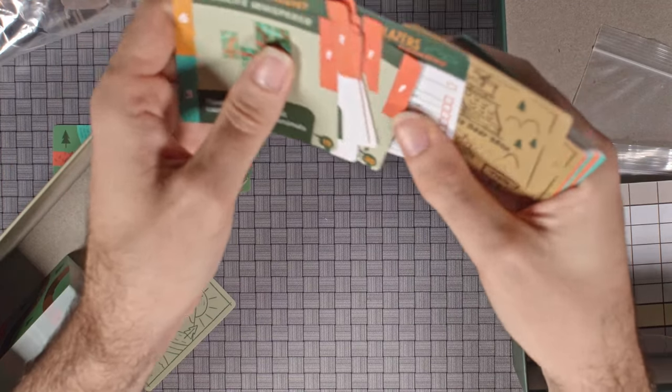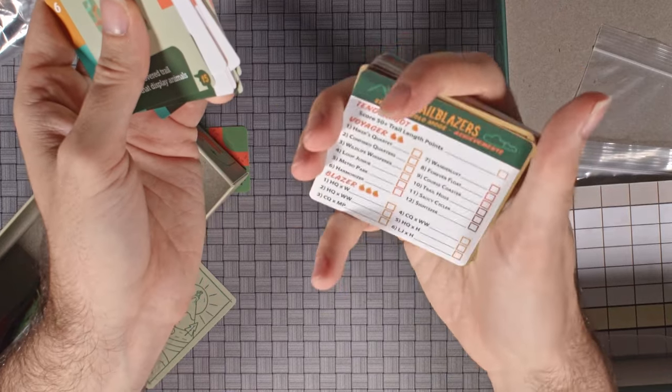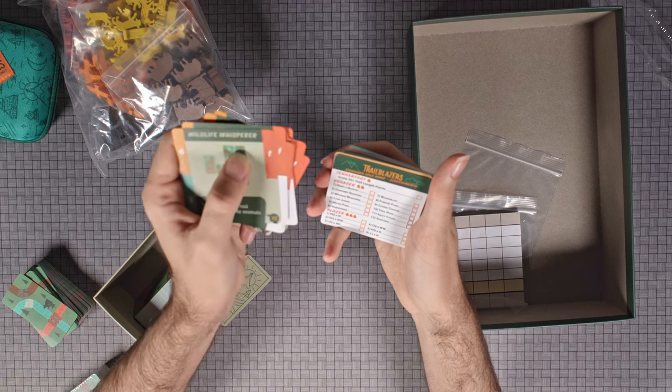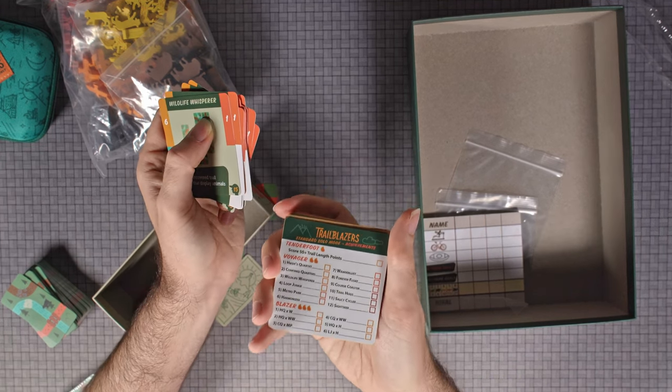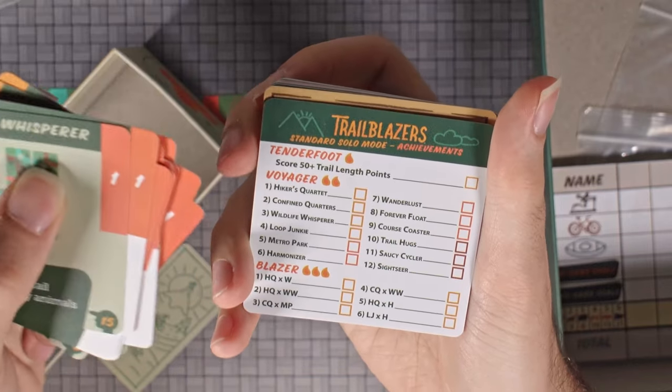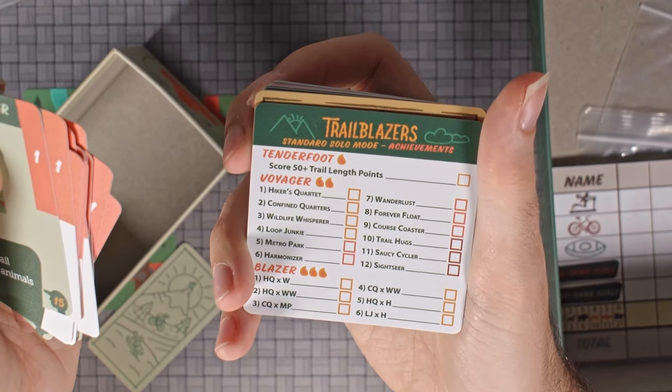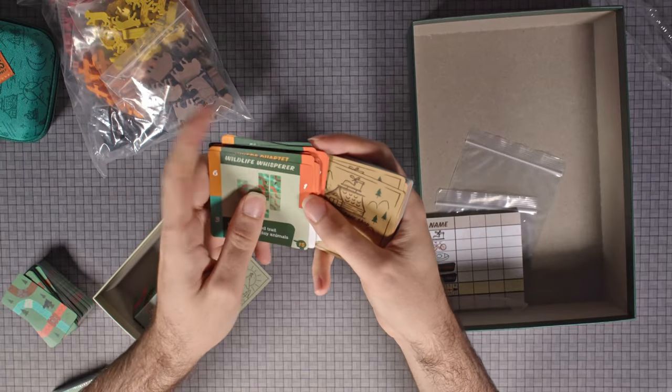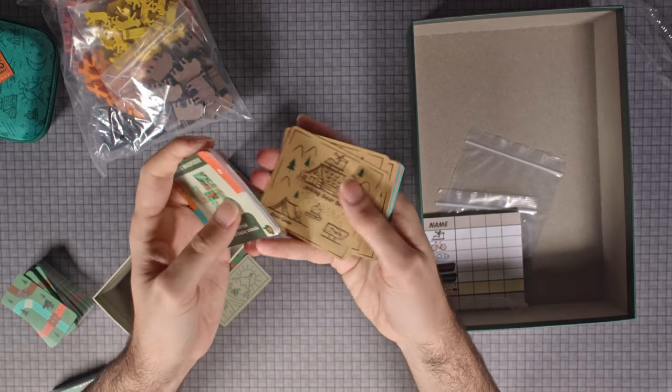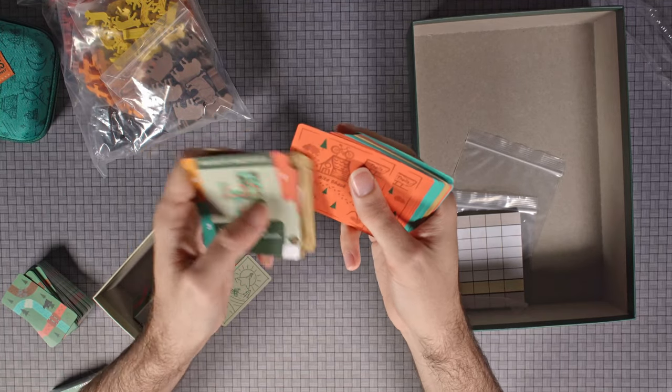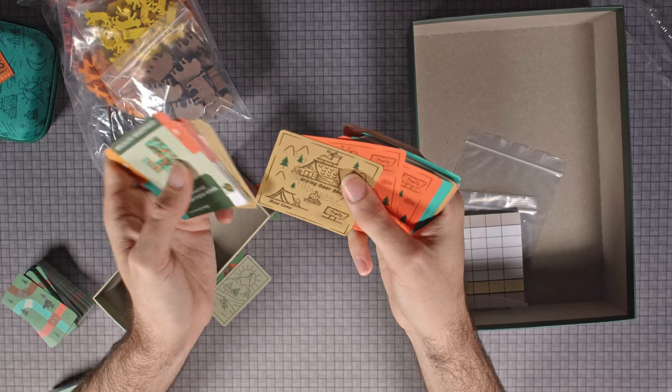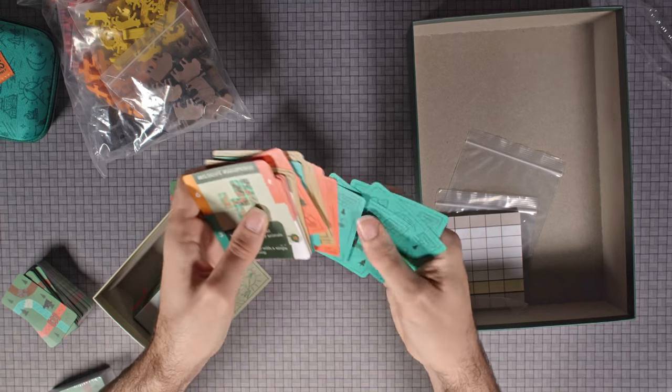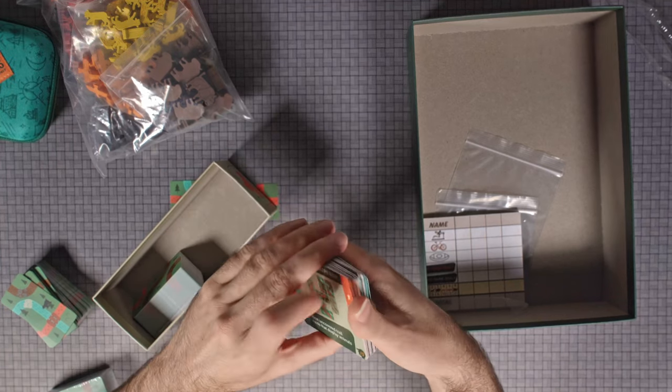Standards—oh, solo mode stuff. Oh my gosh, different achievements. It looks like Tenderfoot if you get 50 plus trail length points. Let me actually hold that so you can actually see it. A Voyager, like Hikers Quartet—I don't know what that is yet. Yeah, there's evidently a whole bunch of solo stuff. There's not a solo rulebook here; it's all online. But yeah, I'm very excited to look at that. This is the bike shack, we have a hiking gear shop, a kayak corner. More, more, more. Okay, I'm liking what I'm seeing. Score card right here, pretty straightforward.